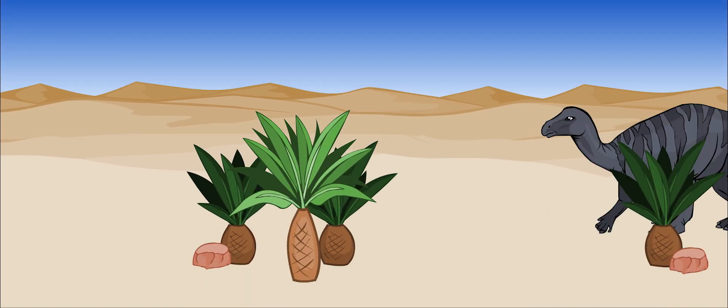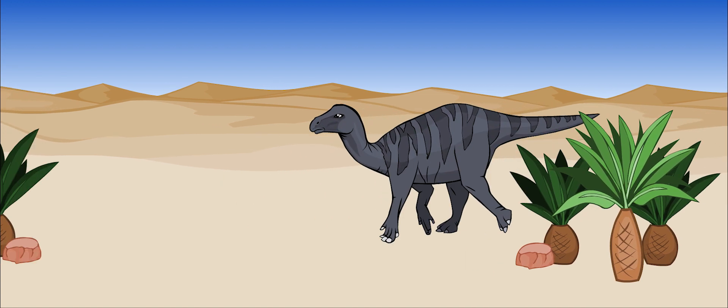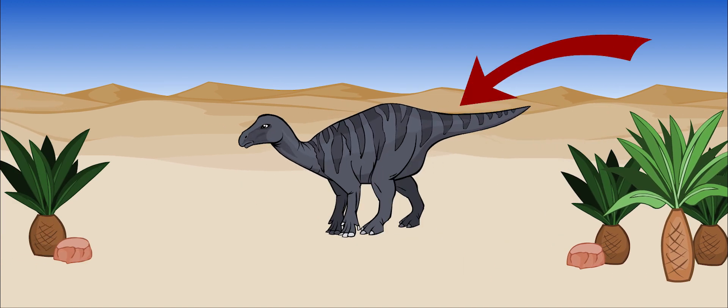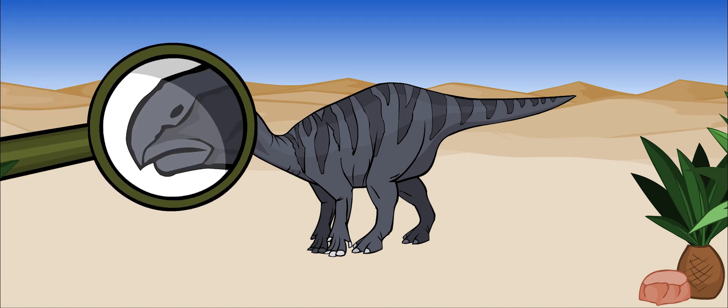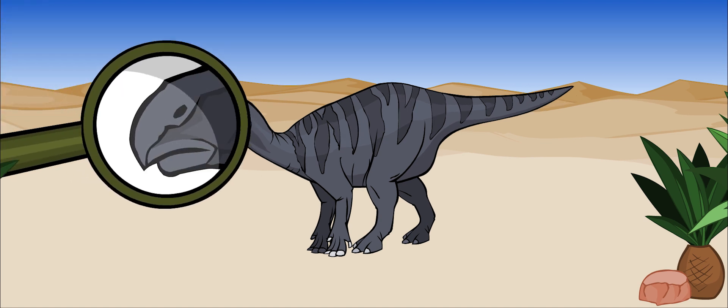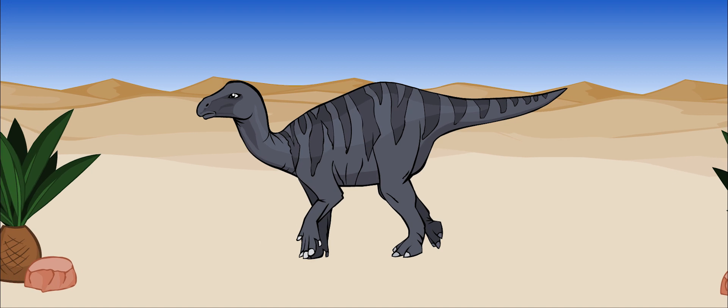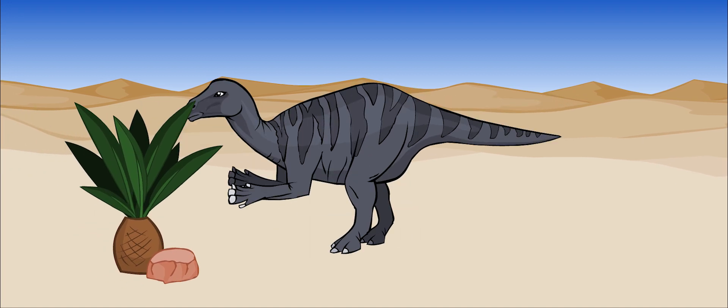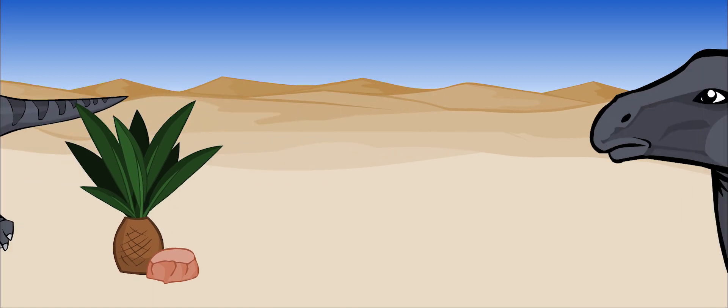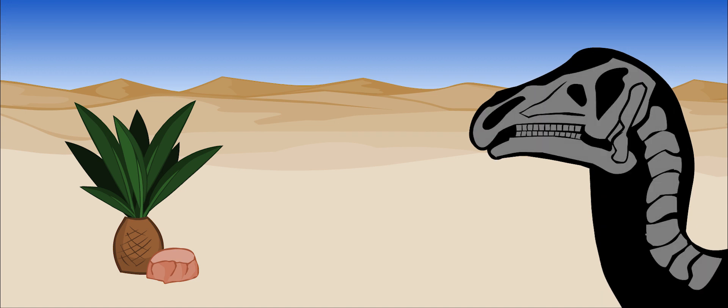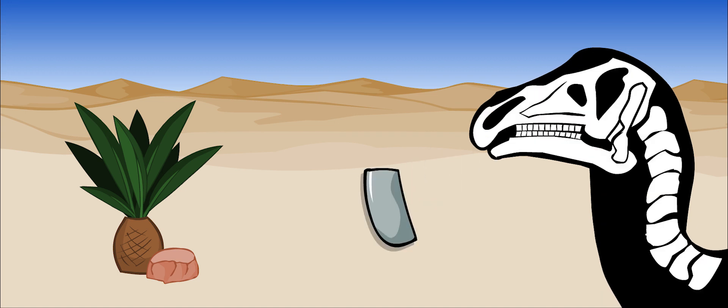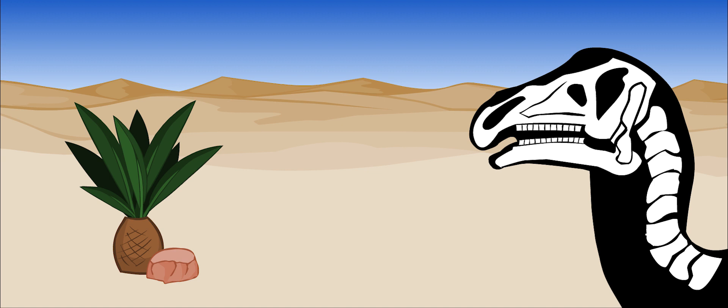Iguanodon had a flat, stiff tail which stuck straight out behind it for balance. It had no front teeth, just a horn-covered beak which it used to rip the leaves off of cycads or other tough plants. In the back of its mouth, it had rows of grinding teeth packed closely together. Its teeth were about two inches long. Iguanodon may have been one of the first dinosaurs that could chew its food. Its upper jaw could move from side to side.